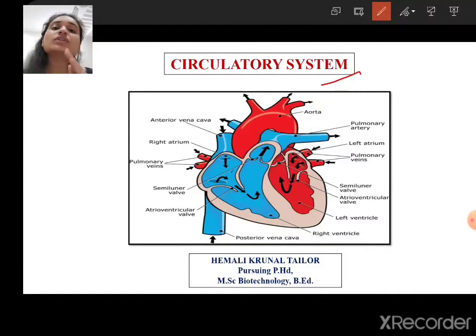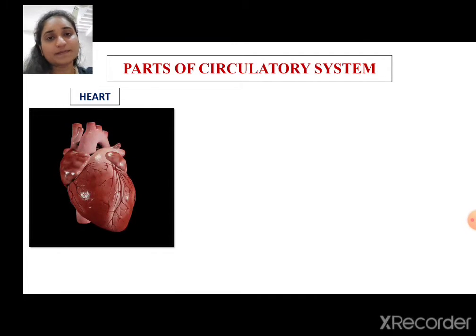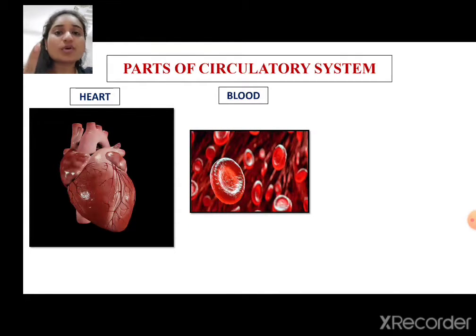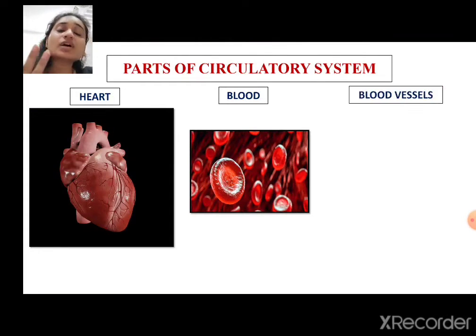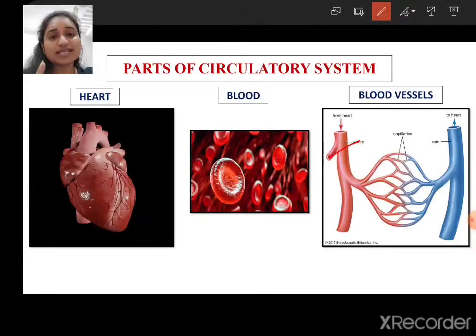Different organisms at different levels will have a different circulatory system, but the human circulatory system consists of three parts. The first part is the heart — a pumping organ. The second is blood — a fluid connective tissue consisting of plasma and formed elements: RBCs, WBCs, and platelets. The third is blood vessels, which consist of arteries, capillaries, and veins.